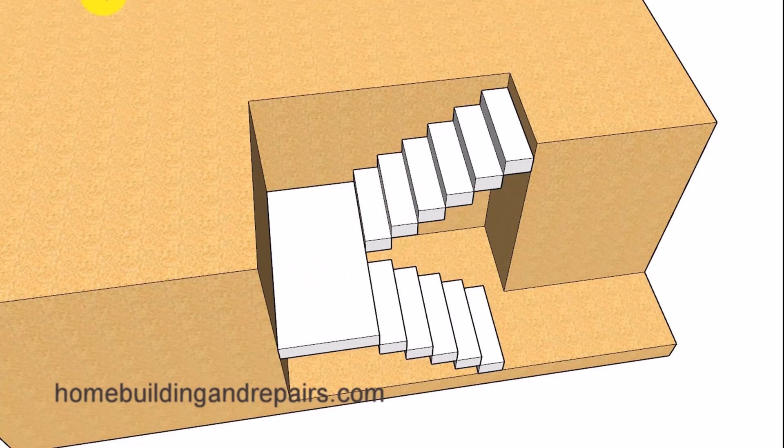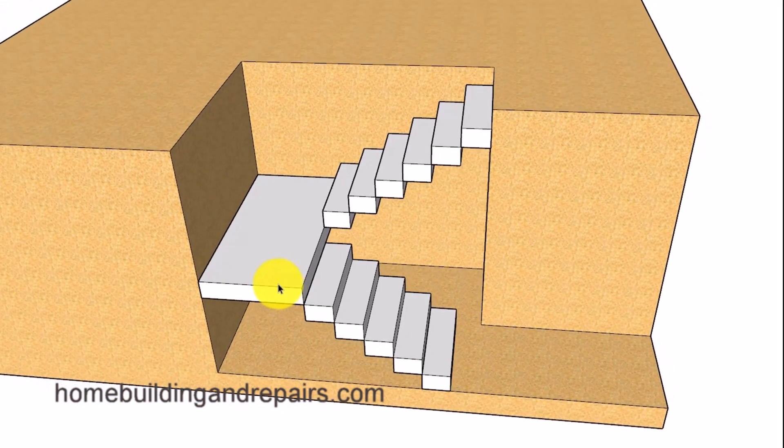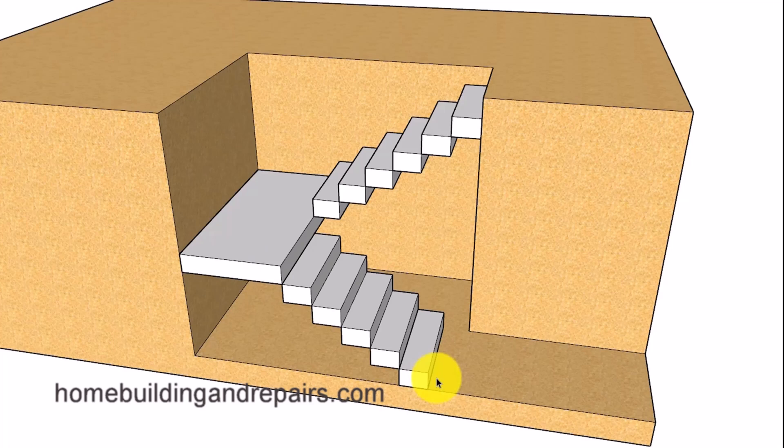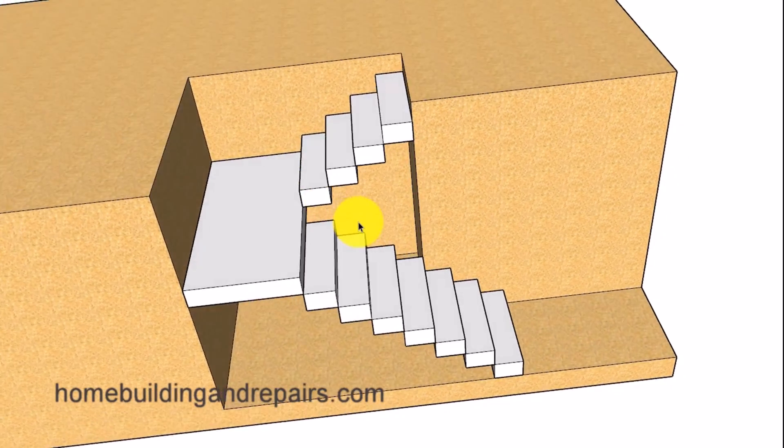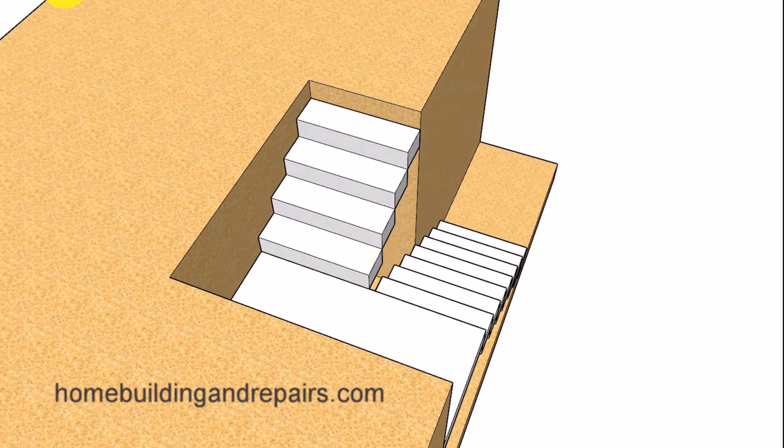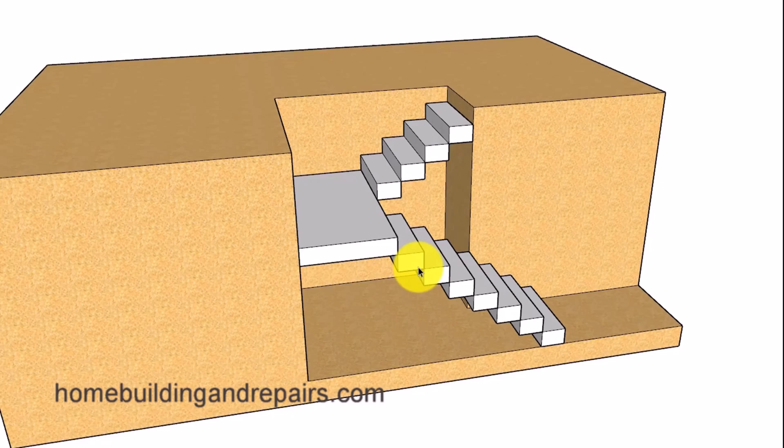And in this design, the landing is often located somewhere in the middle of the stairway. For example, you might have five or six steps going up to the landing, and then five or six steps going up to the second floor. Or you can have a situation like this. Again, the landing can be located anywhere within the stairway.